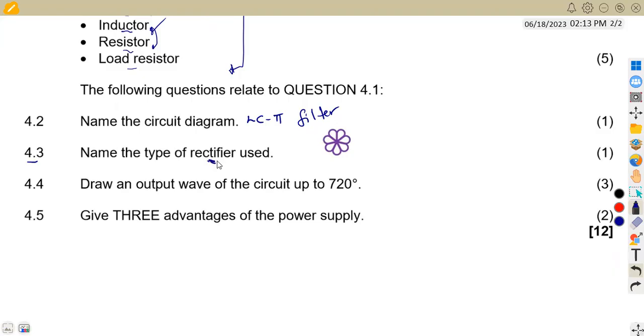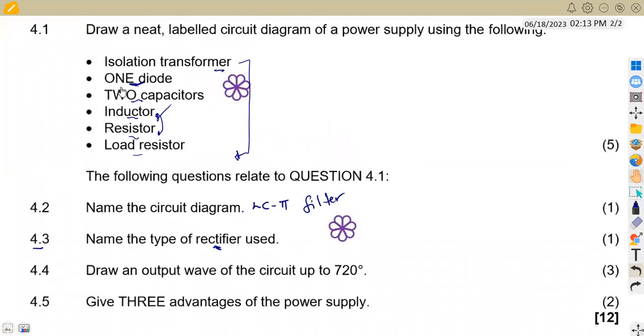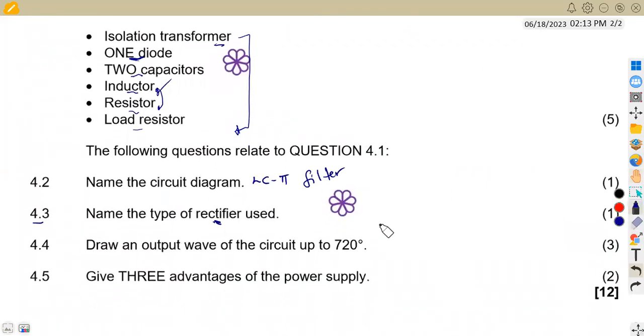We have got one diode. I explained this part - whenever having one diode, meaning that's a half wave. Two diodes, that's a full wave.